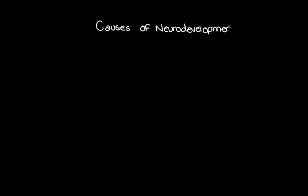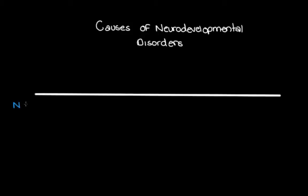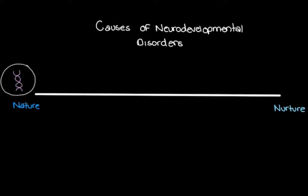Let's take a look at a few of the more common events that can cause neurodevelopmental disorders by categorizing them. Let's draw a line with nature on one end and nurture on the other end, giving us a spectrum. When we say nature, we're talking about things that are innate, things we are born with — like our DNA, our genetic instructions inside our cells. Let's put genetics here on the nature side of our spectrum.